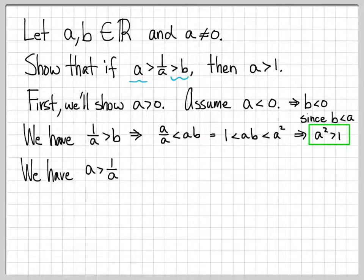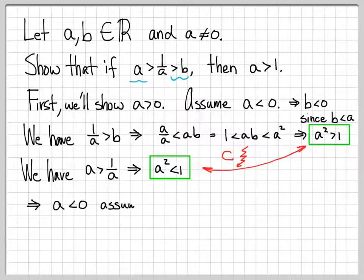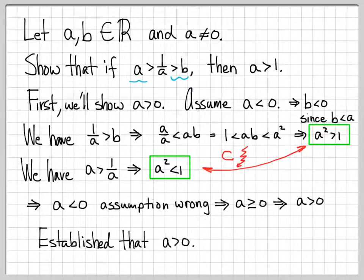Going back to our other starting assumption: a is greater than 1 over a. If we multiply both sides by a, and we're still assuming a is less than 0, we get a squared less than 1, because we have to change the direction of the inequality. Now we have a contradiction: a squared is less than 1, but we just showed a squared is greater than 1. It can't be both. So our assumption that a is less than 0 is wrong, meaning a must be greater than or equal to 0. Since we know a is not 0, we conclude a is greater than 0.